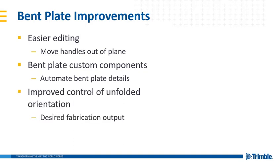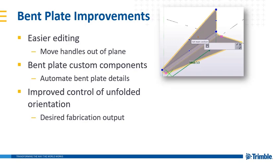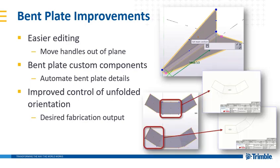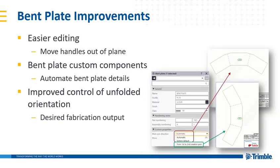We've also improved control of the unfolded orientation. There's a new Set Main Section command available, because the main section defines the coordinate system that determines how the plate will be oriented in drawings when it's unfolded. You can now control which section will be the main section when unfolded. The main axis direction user-defined attribute is also available for bent plates and can help give further control for how those plates will be oriented when unfolded.